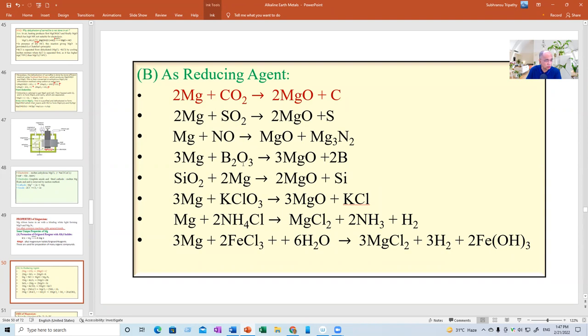Similarly it will take away sulfur from sulfur dioxide. But with NO, there will be formation of nitride, not N2. Nitrogen will go from plus 2 to minus 3. So you must remember that these are some of the unique reactions of magnesium. Magnesium can also reduce boron from boron oxide. It can reduce silicon dioxide to silicon. And it can also reduce potassium chlorate to chloride, a high jump from plus 5 to minus 1. In all the cases, magnesium becomes magnesium oxide. Except in ammonium chloride, it is as if it is displacing hydrogen.